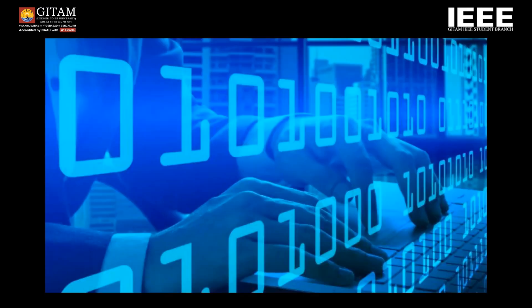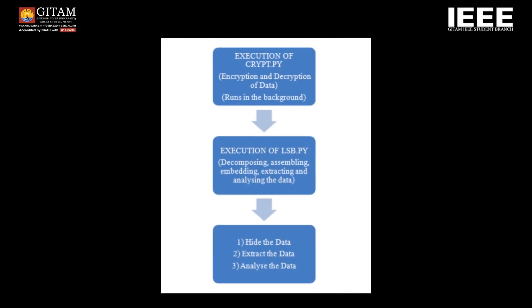It is one such technique in which the least significant bit of the image is replaced with a data bit — the least significant bits of some or all of the bytes inside an image are replaced with a bit of the secret message. Now let's get on to my project, which is based on this method. This is the flowchart representation of my project. It consists of two files: script.py and lsb.py. The project can be broadly classified into three processes: hiding the data, extracting the data, and finally, analyzing the data using a visual representation such as a plot graph.